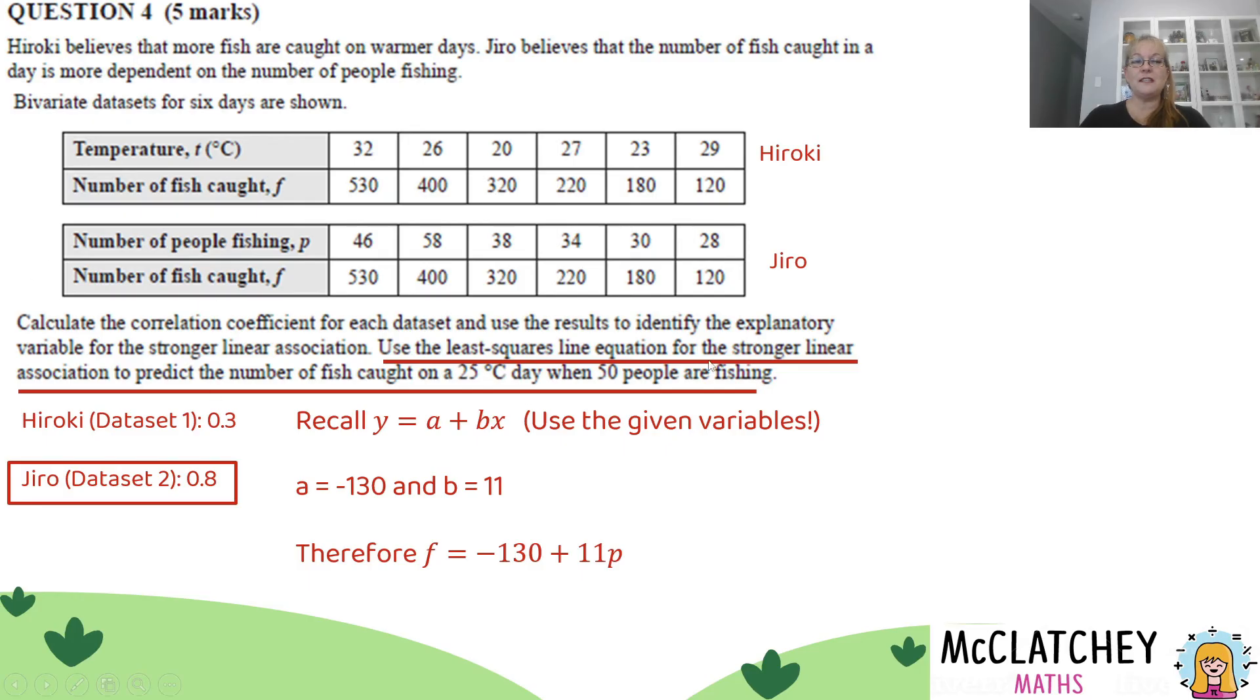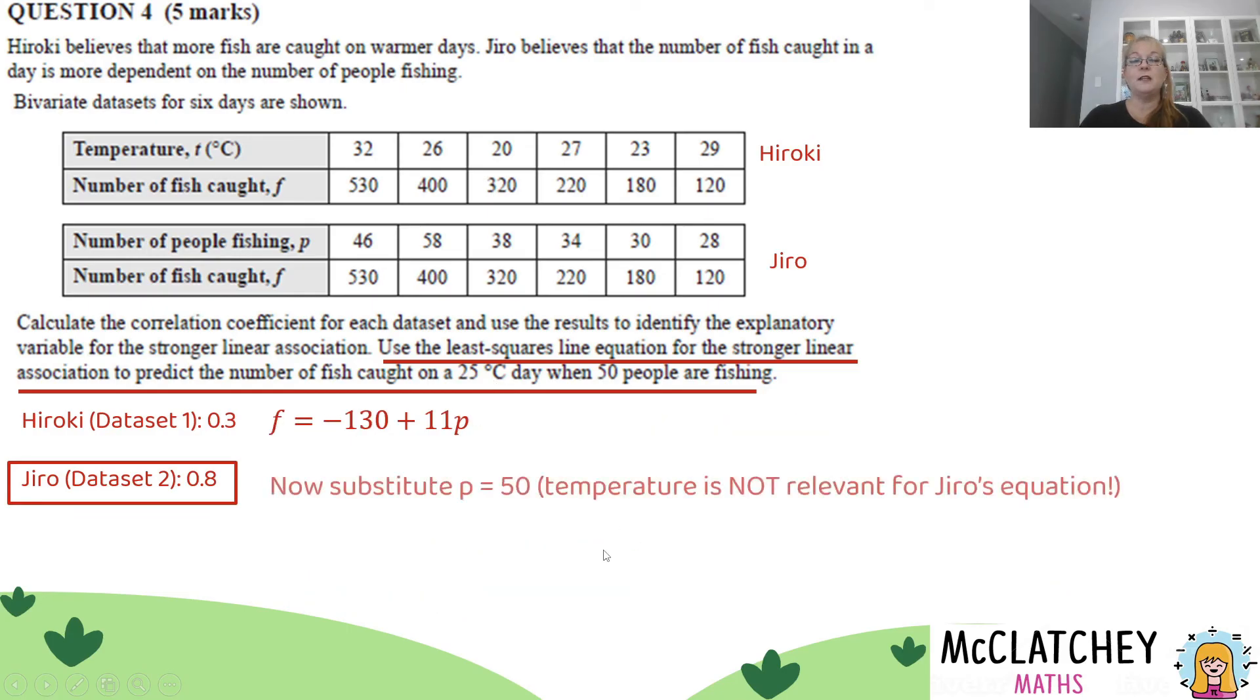So now we need to use this equation for Jiro to work out the number of fish, P, when there's 50 people fishing on a 25 degree day. You'll notice for Jiro, and yes, we did get a mark here for that, but you'll notice for Jiro that temperature is irrelevant for his model. So the fact that it's a 25 degree day is not going to help us with this equation. This equation is only interested in the number of people fishing. So we need to substitute P equals 50 into the equation. Show the substitution and you get a mark. Don't just jump straight to the answer.